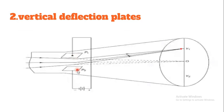This is the display of the electron beam — the vertical or horizontal display. This is the signal. By using these vertical deflecting plates and horizontal deflecting plates, we control the signal display.